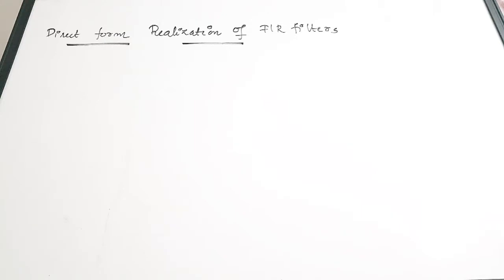I have explained the basic elements and how we actually draw a block diagram and signal flow graph in that video. It is in the DSP playlist. There are various types of realizations possible for FIR filters: direct form, cascade form, and lattice structure. But today we are going to discuss only direct form realization. We have also done a series of videos on IIR filter realizations.